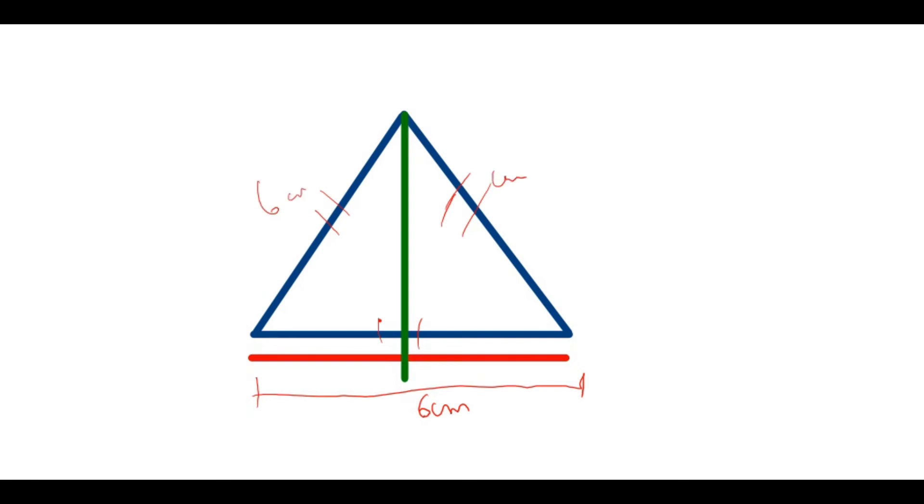Whenever a perpendicular line is drawn which bisects from one vertex to another vertex of the triangle, you can divide the baseline into 3 centimeters and 3 centimeters. In this way you can tackle that problem.